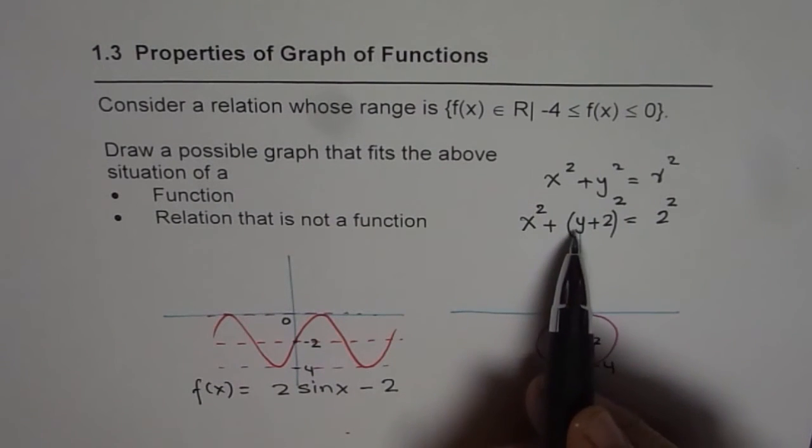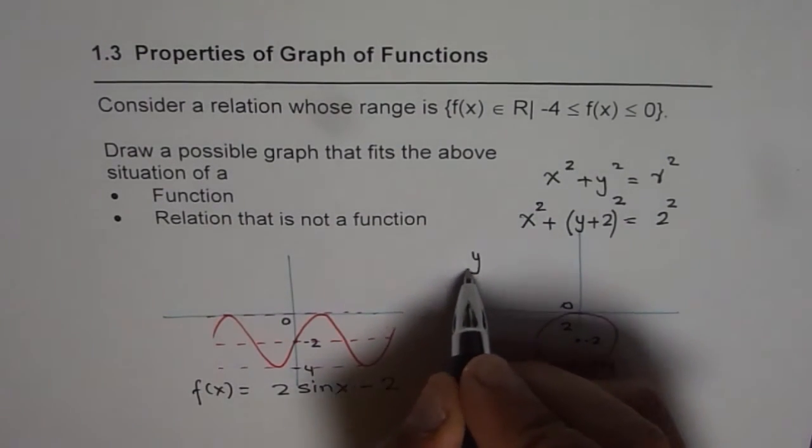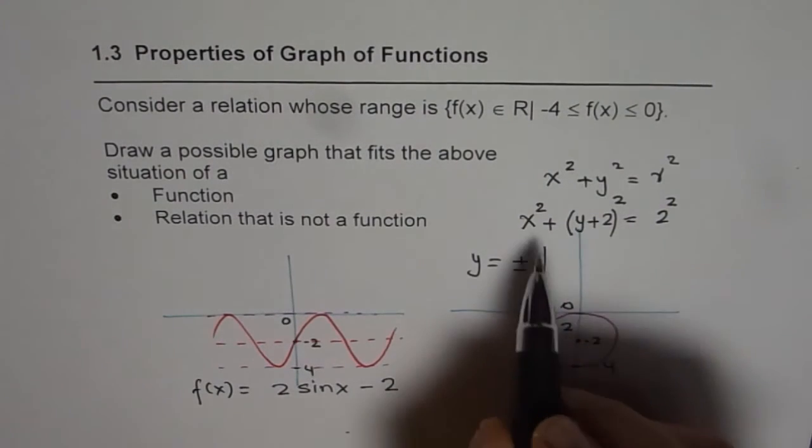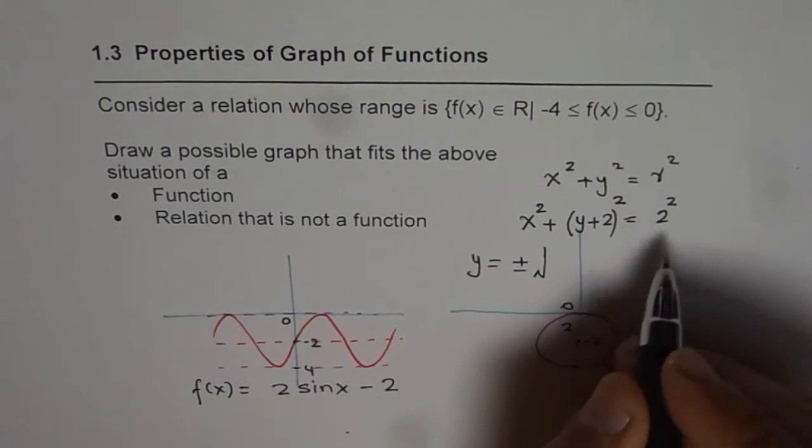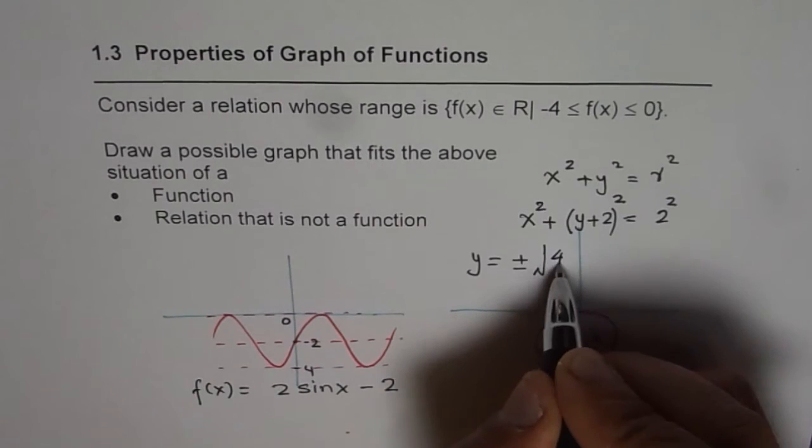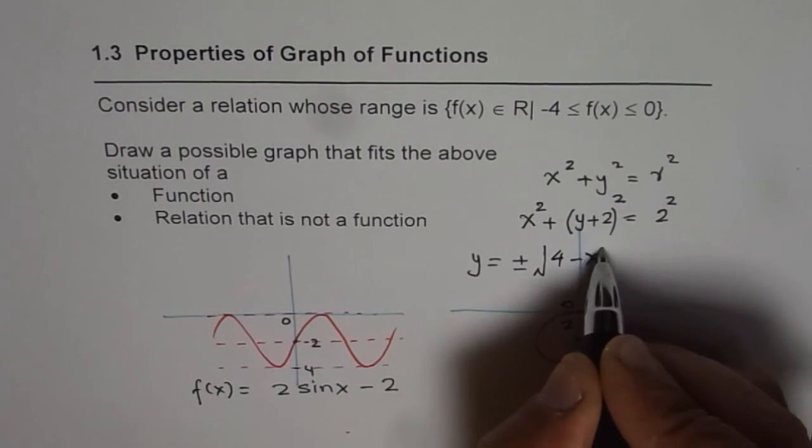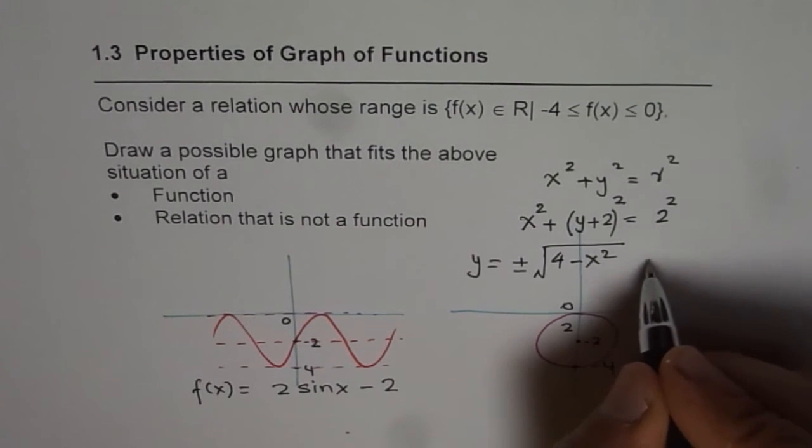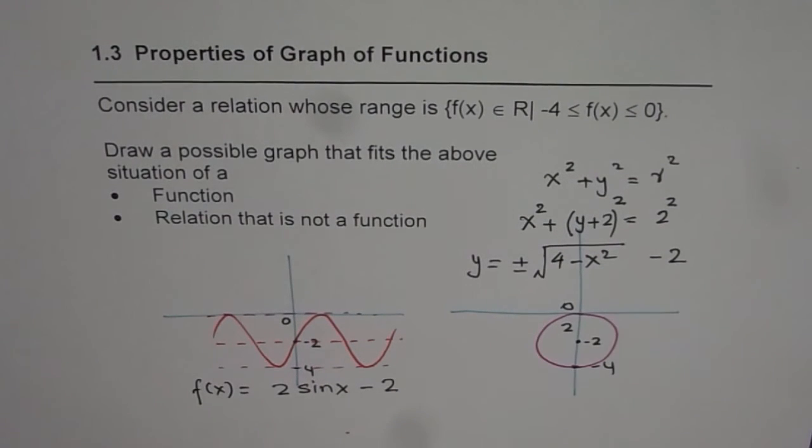You can always rearrange this and write in terms of y as y equals plus or minus square root of, so first we will take x² on this side. This is 2 square is 4, 4 - x², square root and then minus 2.